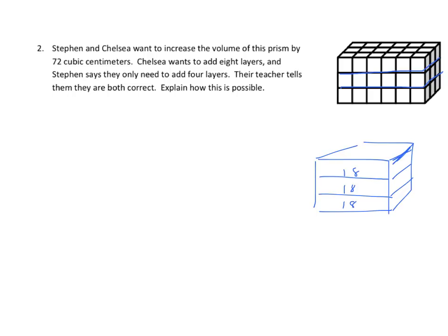We could also go from front to back. And, again, if I look at that, I have 6 by 3. That's 18 once again. And we could build these layers out going from front to the back, 18 each, and see how many more layers we need to get to that number of 72.